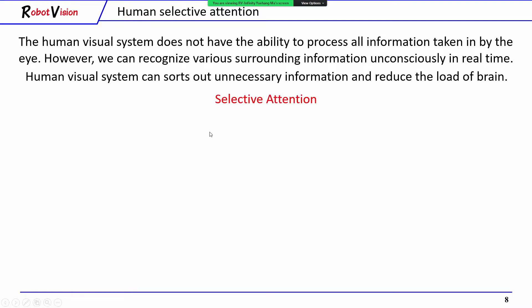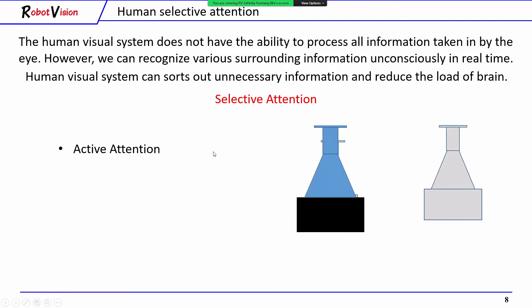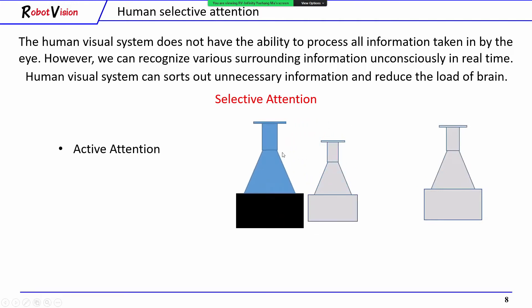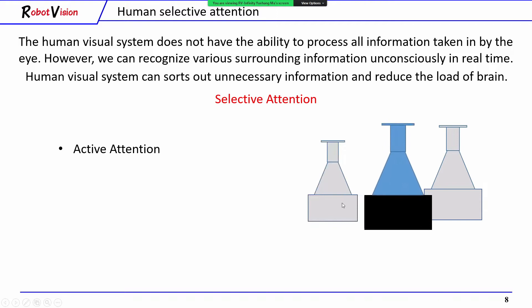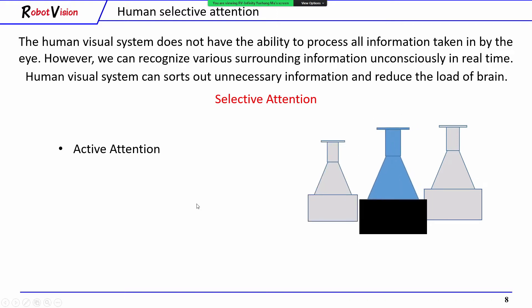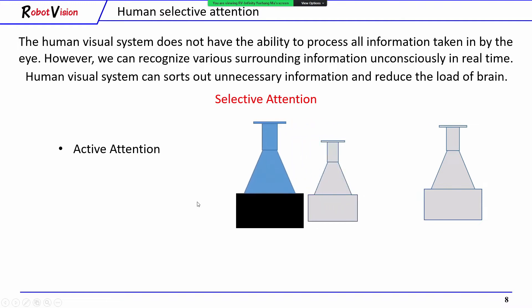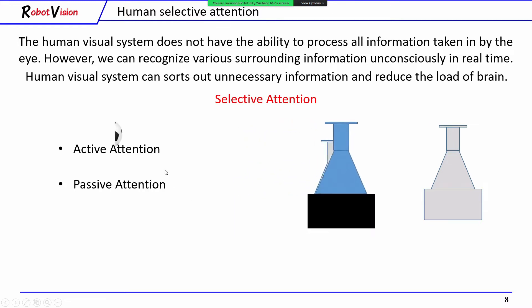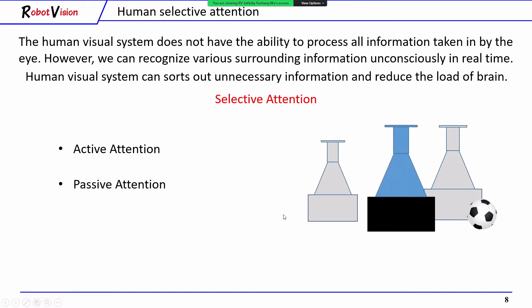Selective attention consists of two elements. One is active attention: when we look at a given object, we only pay attention to a narrow area, like this blue robot. On the other hand, we can notice objects that appear in our view suddenly, like this ball. We call this passive attention.